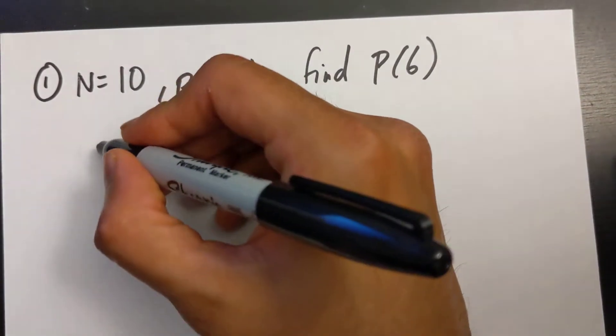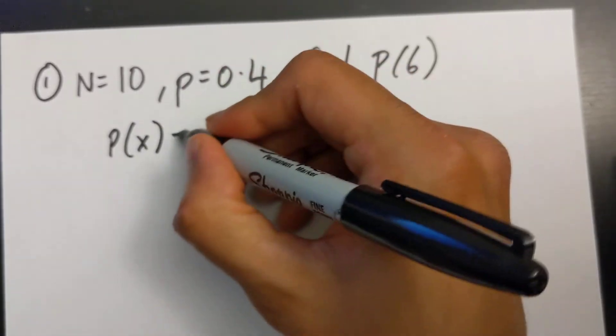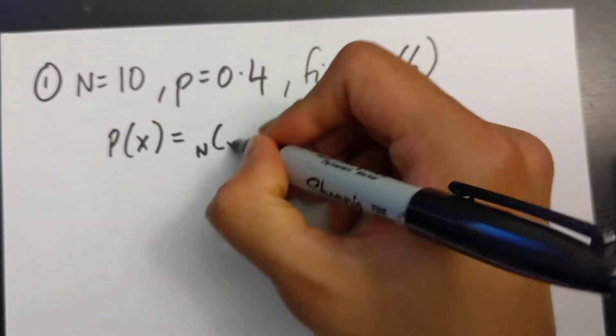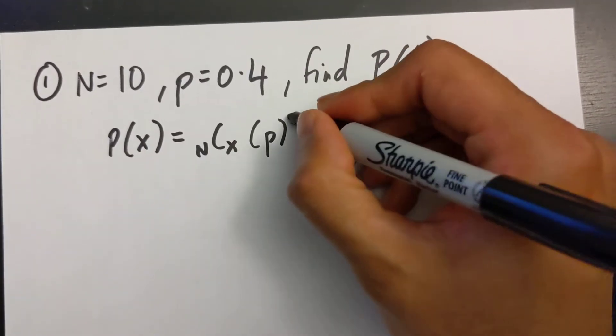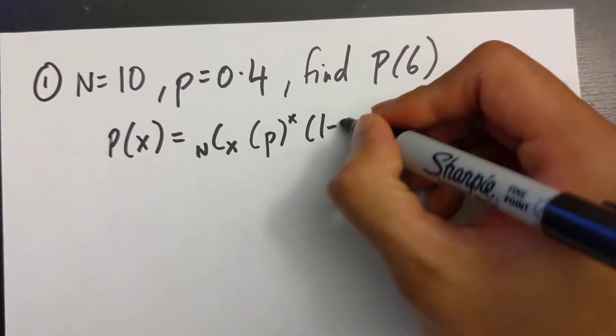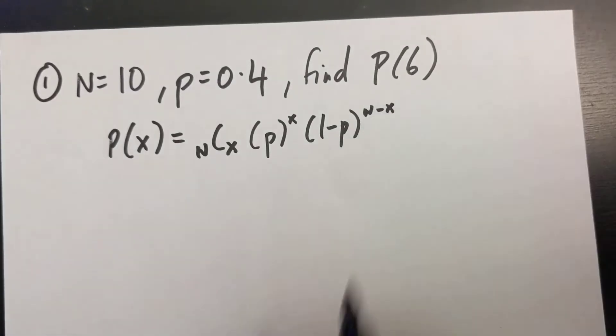I'm going to start with my binomial equation. So P of x equals nCx, p to the power of x, 1 minus p to the power of n minus x.